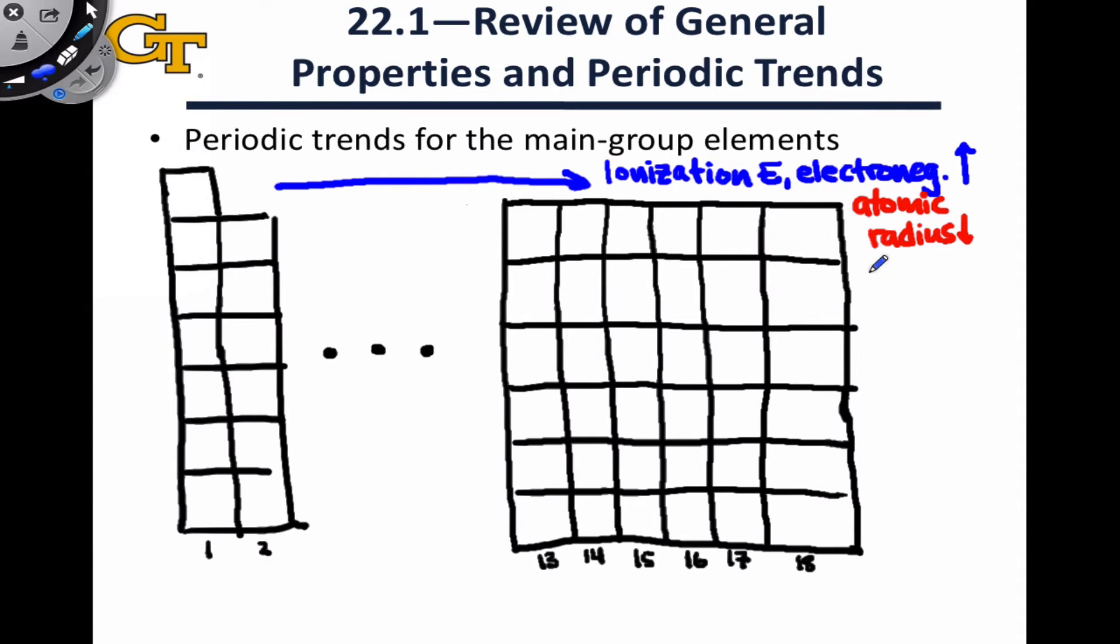As we move down the periodic table, down a group, we see the opposite trends. Moving downward, ionization energy and electronegativity both decrease, while atomic radius increases, and this is due to the addition of larger shells, larger principle quantum number, for the valence electrons as we move down the group.